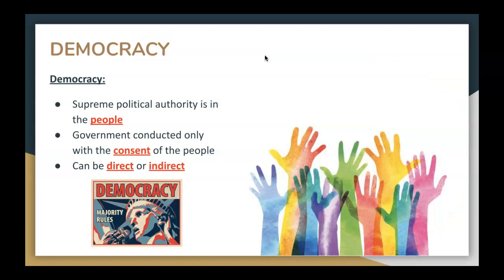Let's look at democracy first. Democracy is the supreme political authority that rests in the people — government conducted only with the consent of the people. This can be direct or indirect. As you're aware, we live in a democracy. In theory, everyday citizens have a voice — a voice in their rights and responsibilities, and also a voice in the way upon which they interact with their government. In a free society, we typically associate democratic values with that.